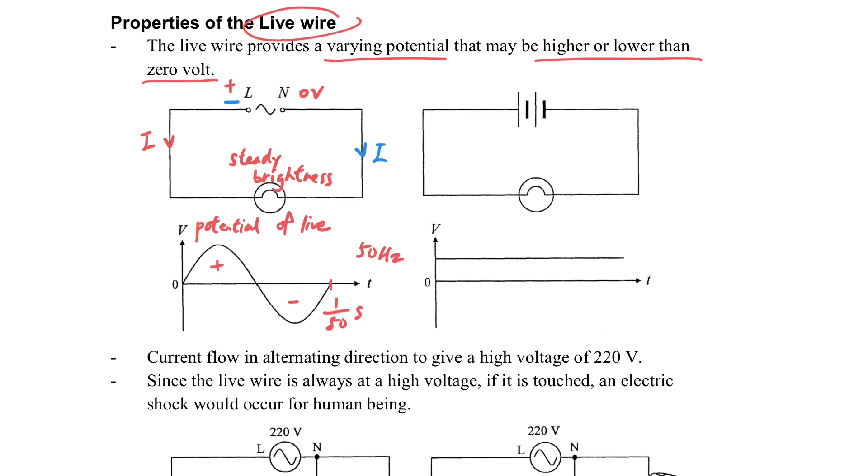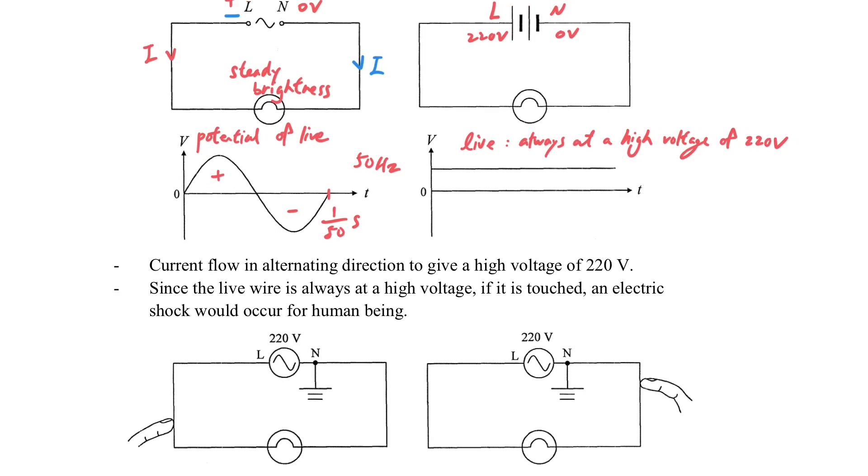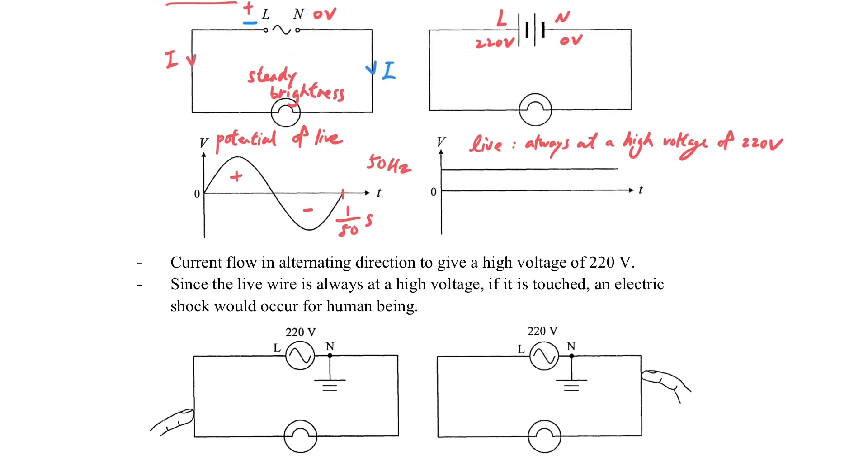You should note that the live wire potential is always changing. You can also consider the battery similar to this situation. The neutral is zero volt and the live is 220 volts. No matter what, the live is always at a non-zero potential, most of the time.